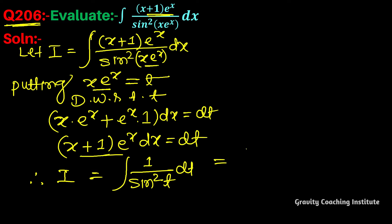Equal to integration cosec²t dt, and this formula gives minus cot t. Now put the value of t to get the answer in terms of xe^x.